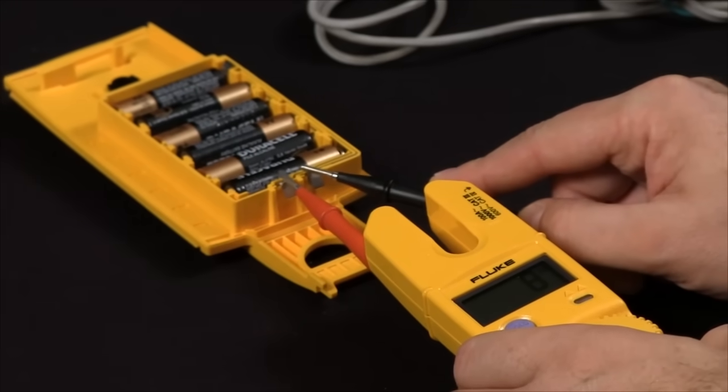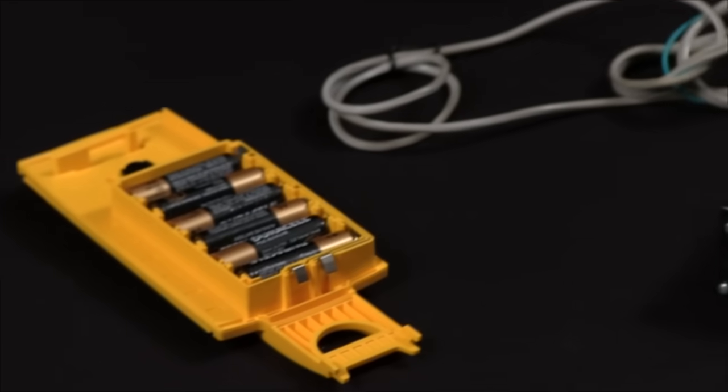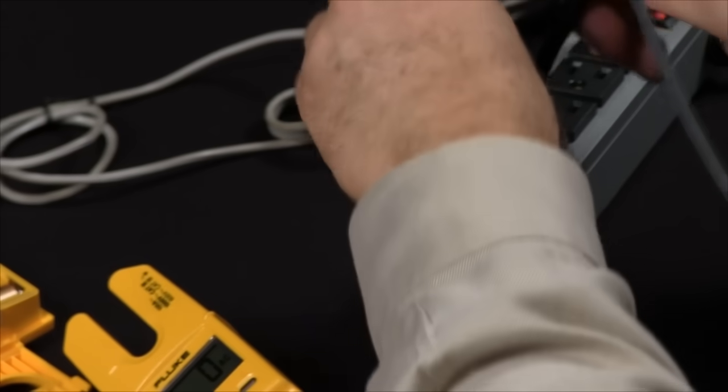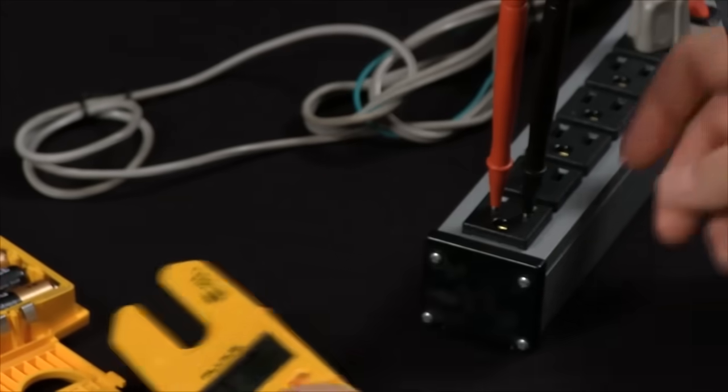To take an AC measurement, all I do is take my probe tips, and I can place them directly into the socket, and now I am measuring 118 volts AC.